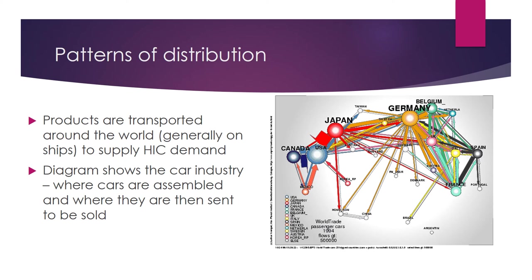That's the pattern of distribution. If you notice, most or all of the countries receiving goods to a large extent are HIC countries. Distribution generally happens both between HIC countries — they sell to each other — but HICs are also the ones that generally purchase goods coming from LIC countries. Trade and distribution are much more concentrated in richer countries, and you may remember from the KOF index that the most globalised countries tend to be the same richer, HIC countries.